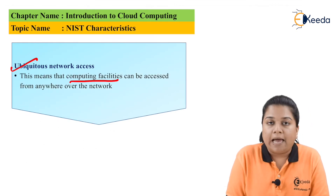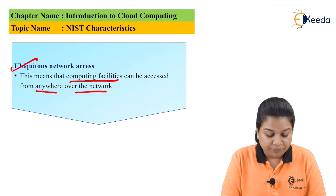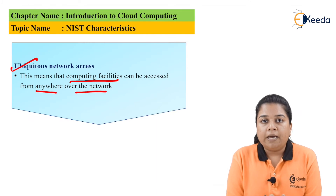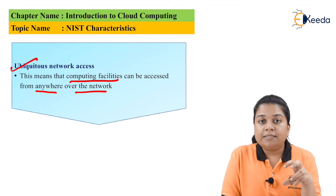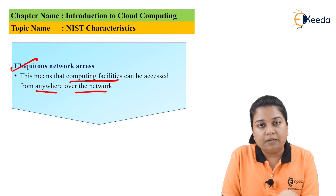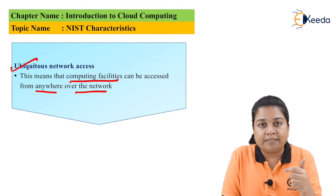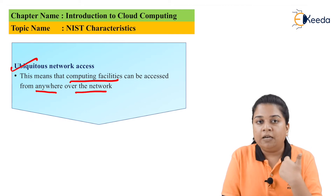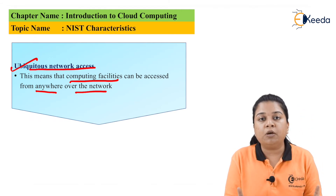The second point is ubiquitous network access. This means that computing facilities can be accessed from anywhere over the network. For example, I am using WhatsApp — I can use it on my phone as well as on my laptop or desktop through WhatsApp Web. Anytime means I can access it now or after some time. Anywhere means I do not have to go to a particular position — wherever I have internet connectivity I can access it. Any device — all these things come under ubiquitous network access.